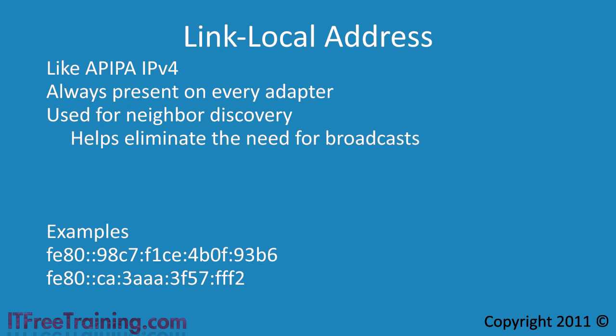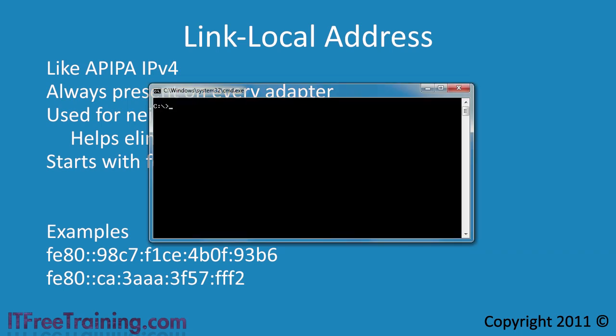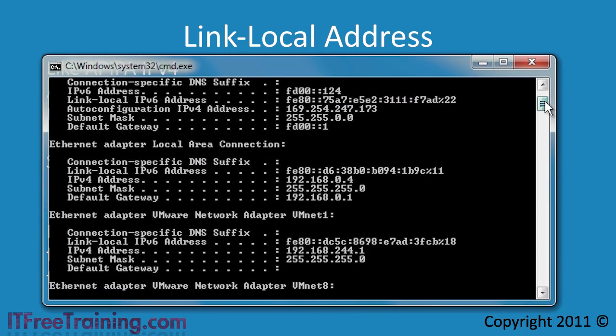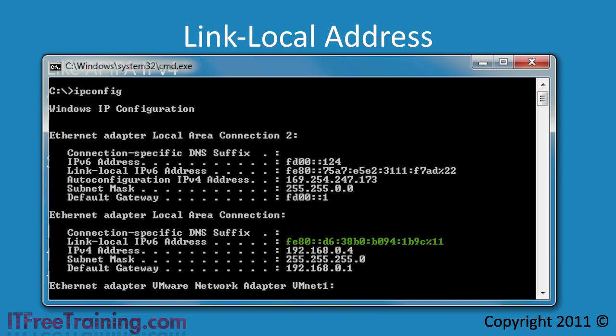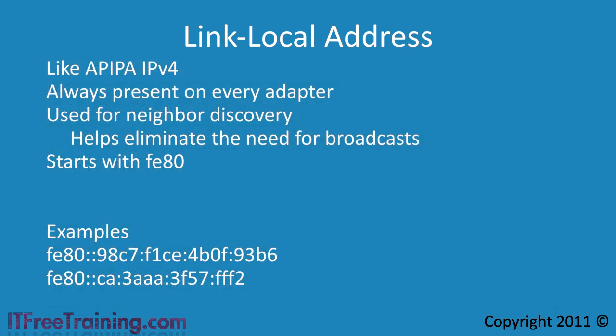All this is done without the use of broadcasts. Since neighbor discovery is used in so many functions critical to network communication, every network adapter has one of these addresses even if you manually configure an IP address or an IP address is obtained from a DHCP server. Link local addresses always start with FE80. If I were to run IPConfig from the command line, you can see the link local address assigned to the adapter even though it has an IP version 4 address and no IP version 6 address configured. If I were to configure an IP version 6 address, this link local address would still be present. Link local addresses are configured automatically and can communicate only on your local network.